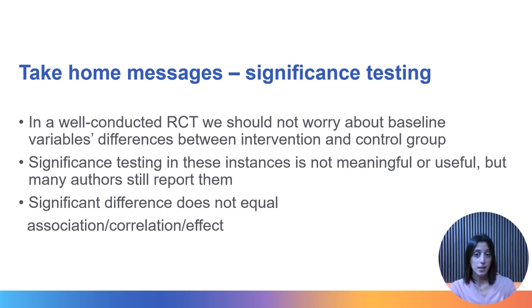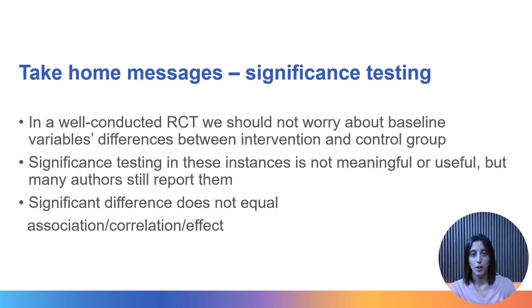I used these examples to show how to interpret p-values when reading tables that report significance testing. Always treat these tests with caution and don't assume that a statistically significant difference means there is an association, correlation, or let alone an effect of a variable on an outcome. There are more sophisticated techniques for those, and we will explore them in our next tutorial.